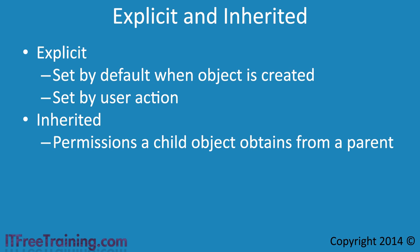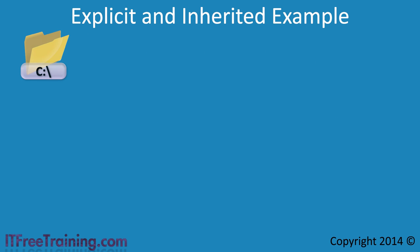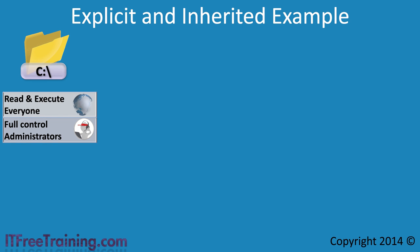Let's consider a typical real world scenario to get a better understanding of how this works. If you consider the root folder of the C drive, the folder has some permissions that have already been assigned to it. In this case, they are explicit permissions since they are assigned directly to the folder, giving everyone read and execute permission and full control to administrators.